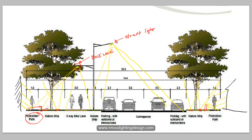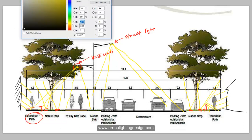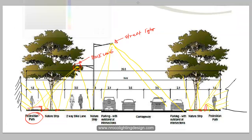Later on we will run a calculation first using the road lighting and the two-way bike lane, and we should achieve the lux level requirements for these areas. We will assume, for example, that this pole height is 8 meters high.